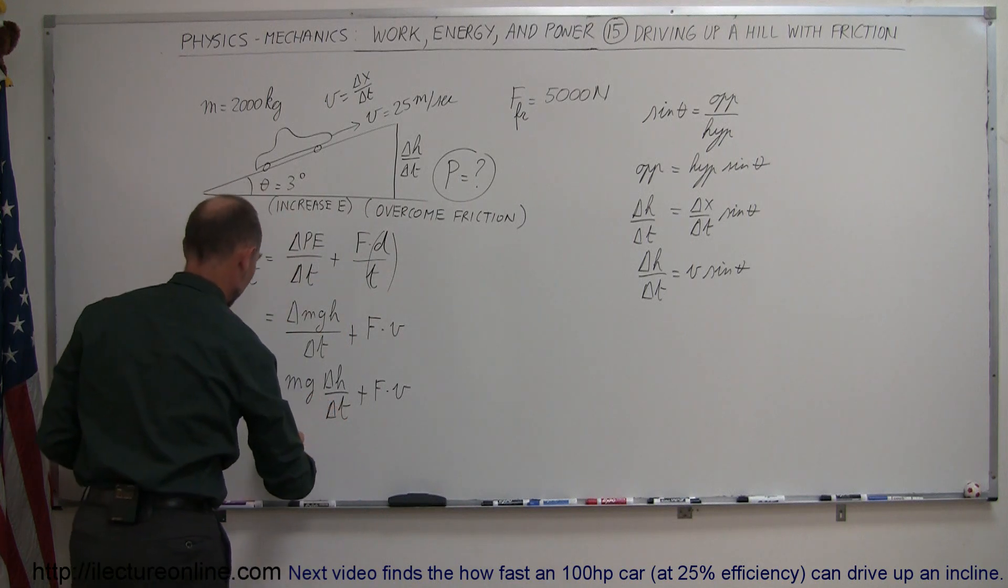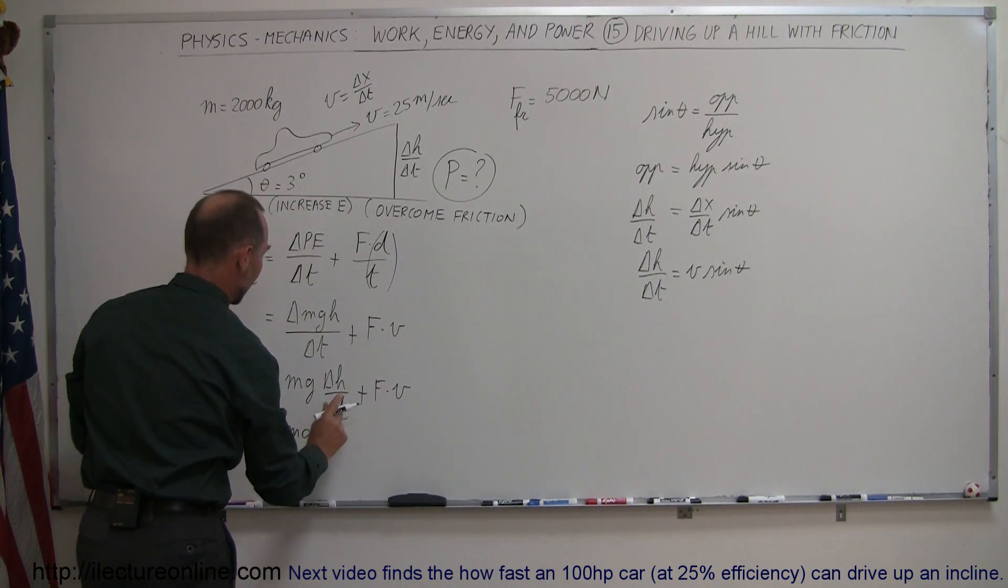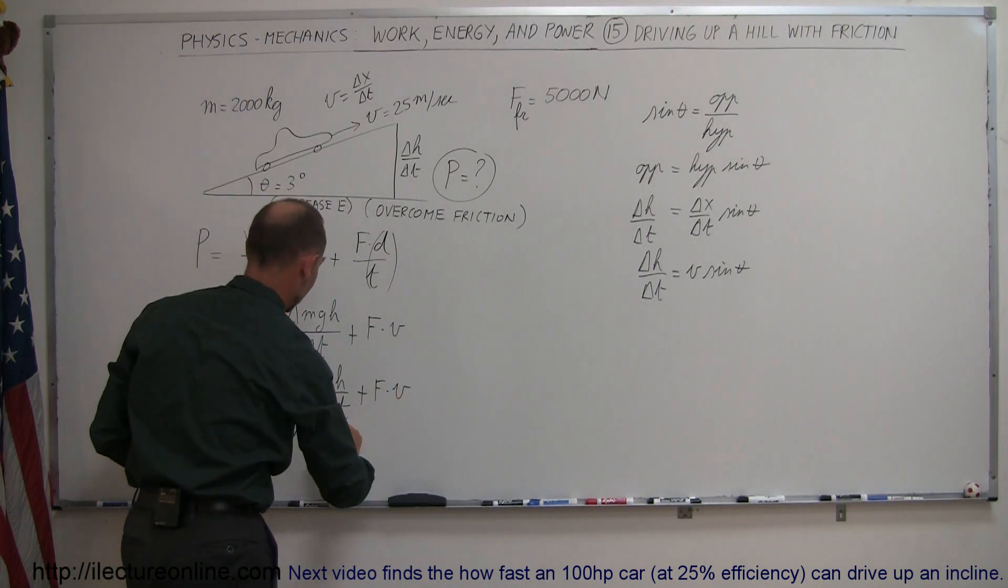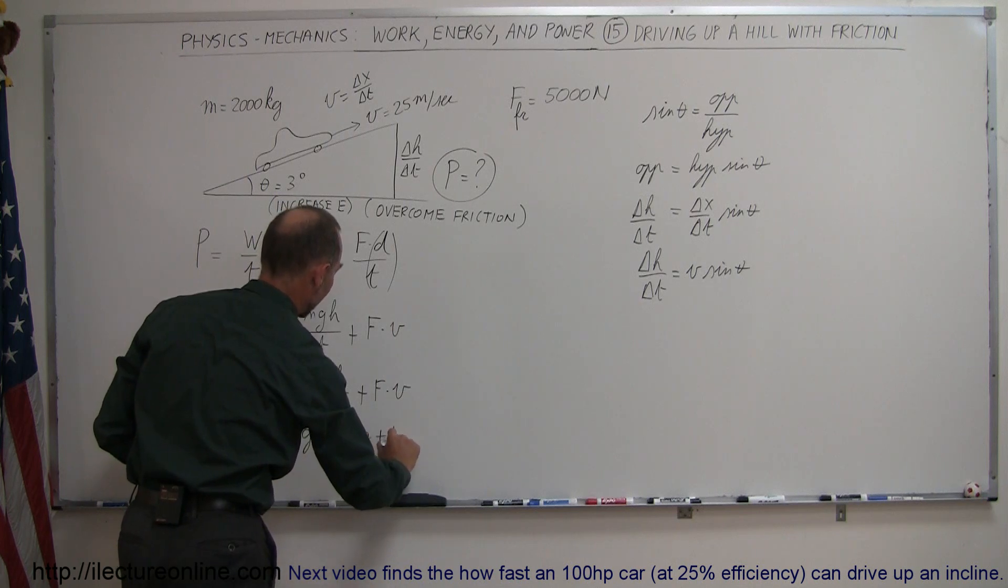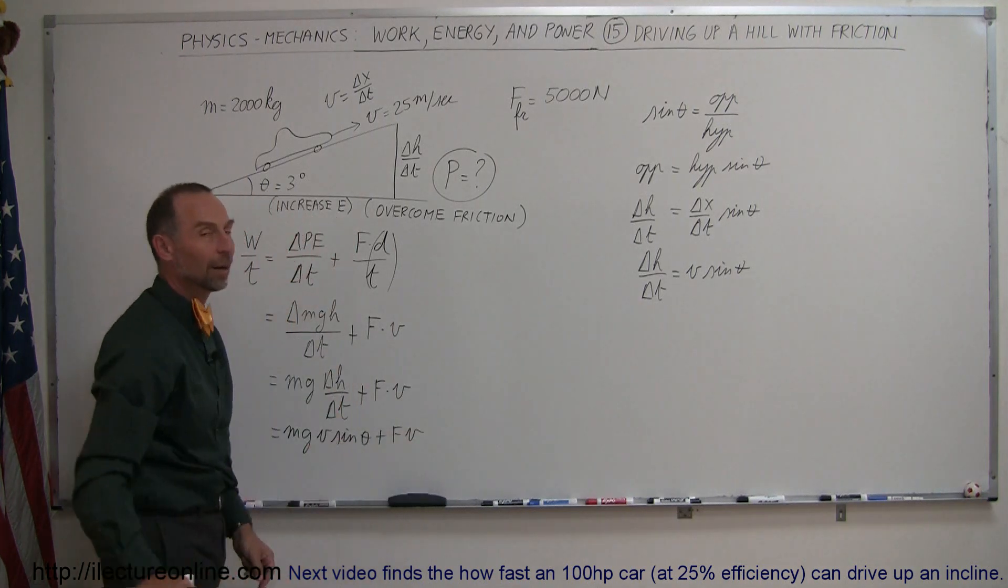All right, so then that can go in here. So this becomes Mg, instead of delta H delta T, we write V sine theta, and then we add to that the power required to overcome the friction.